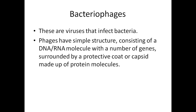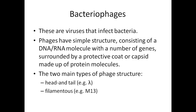The capsid is made up of protein particles, and the DNA or RNA molecule will carry genes responsible for the synthesis of capsid protein or for the replication of the DNA molecule. There can be two types of phage structures: head and tail — an example being lambda bacteriophage — or filamentous, whose example is M13 bacteriophage.